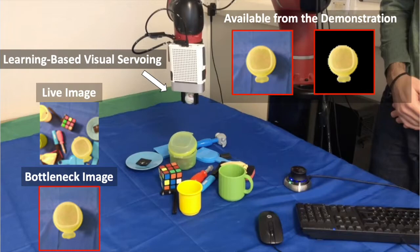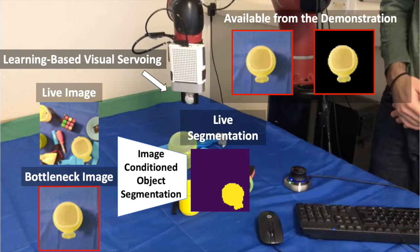To do so, it uses an image-conditioned object segmentation network to obtain a live segmentation of the object and, by extension, the segmented live image.